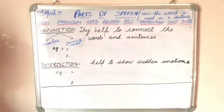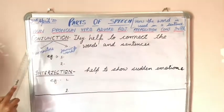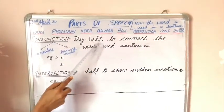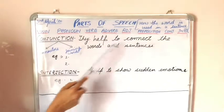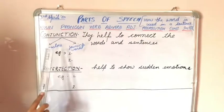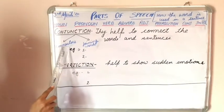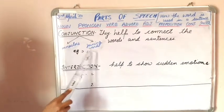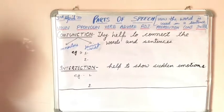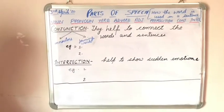Let's begin with the conjunction. Conjunctions are the words which help to connect words and sentences. Children, the word conjunction is also known as connectors and joining words. Now let's understand it with an example.